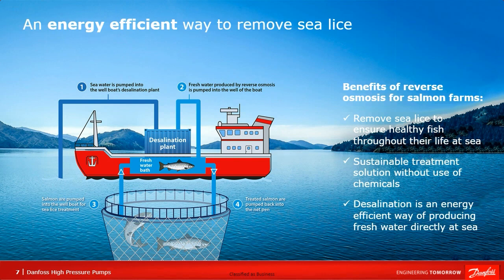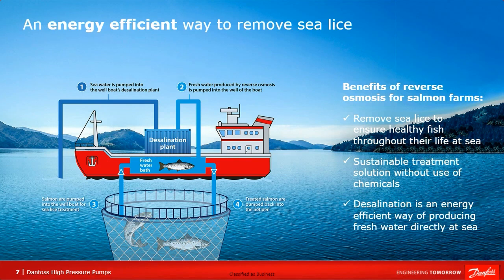You pump seawater into the well boat's desalination plant — being at sea you have a lot of seawater readily available. In the desalination plant, fresh water is produced by reverse osmosis and pumped into the well boat. There you have a large fresh water bath, and you pump the salmon from the open net pens into this bath where the sea lice, unable to survive in low salinity water, detach from the salmon. After treatment, the salmon are pumped back into the open net pen for the rest of their grow-out period — allowing you to sustainably treat sea lice without the use of any chemicals.